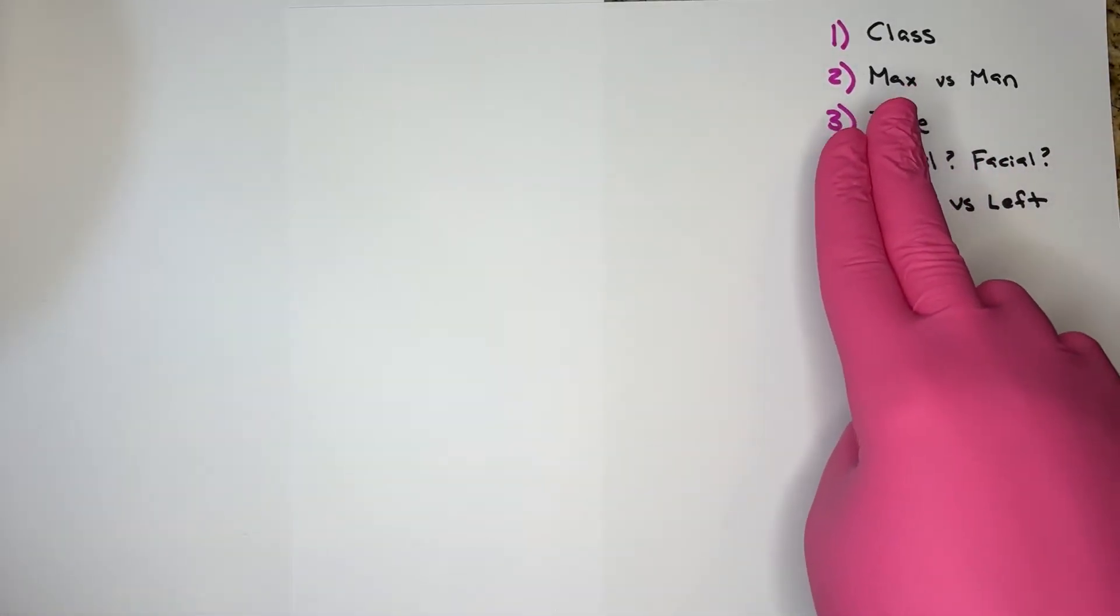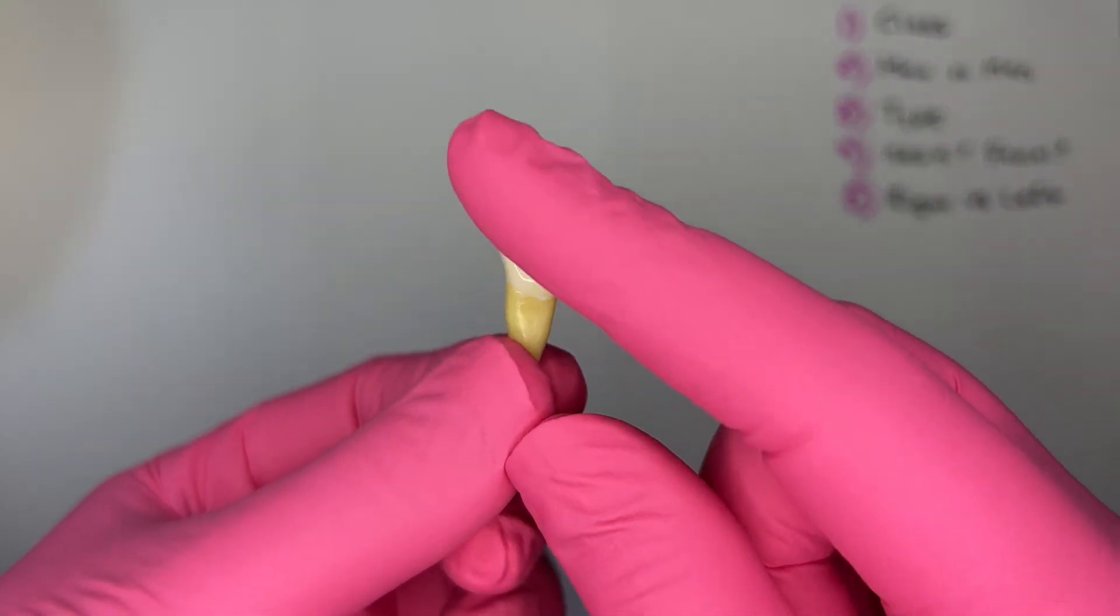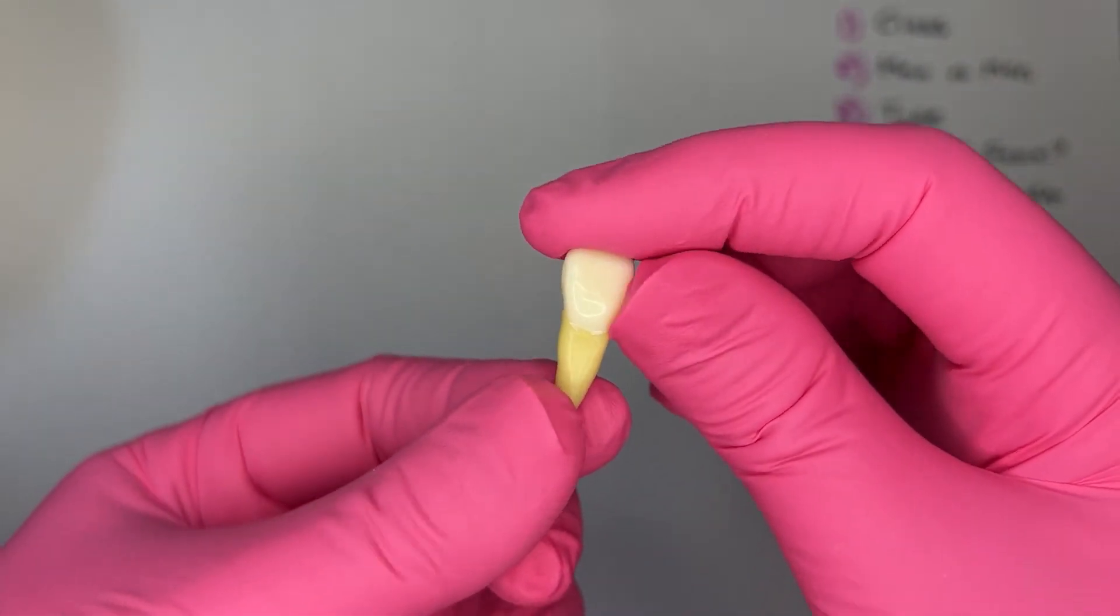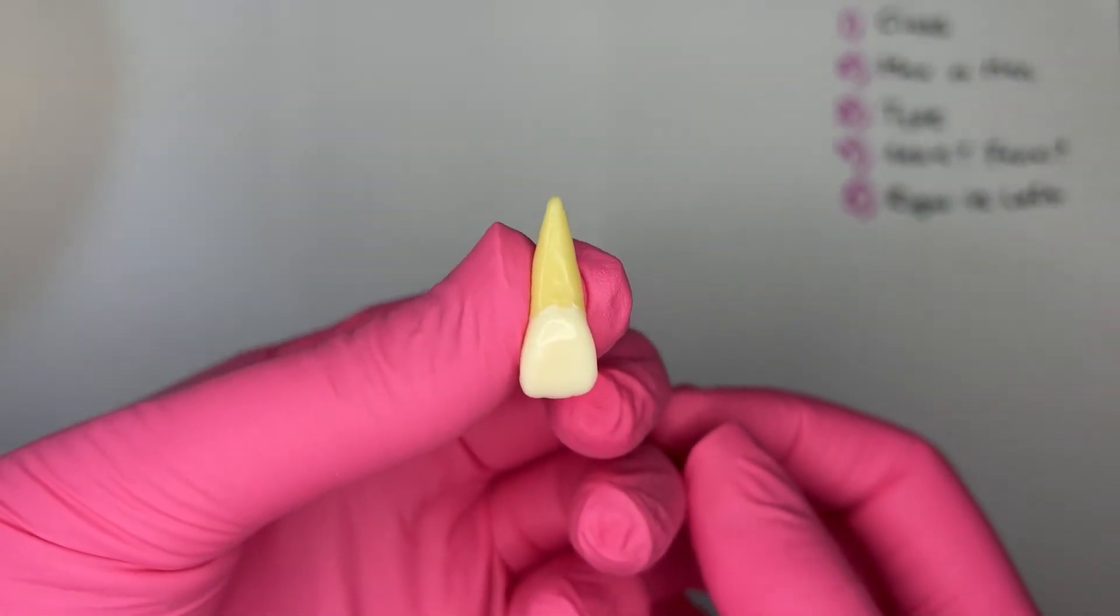Step two, is it a maxillary or mandibular incisor? With this large square shaped crown and cone shaped root, I know this is a maxillary incisor.